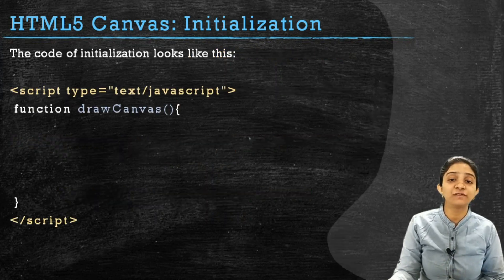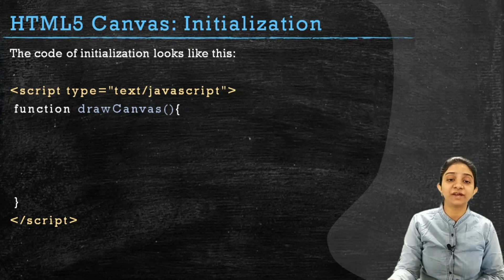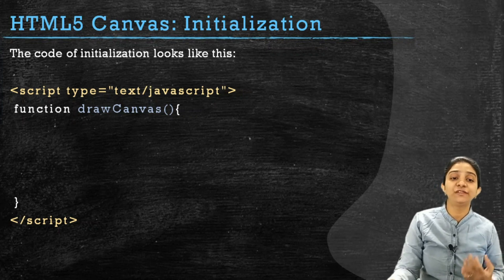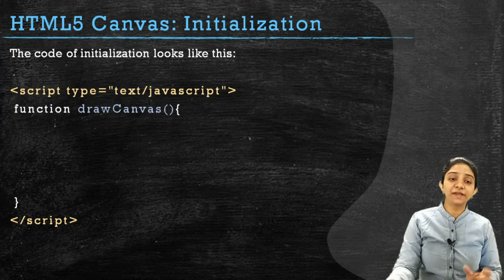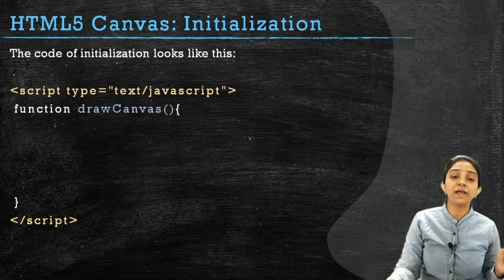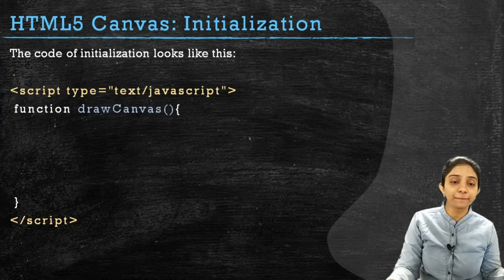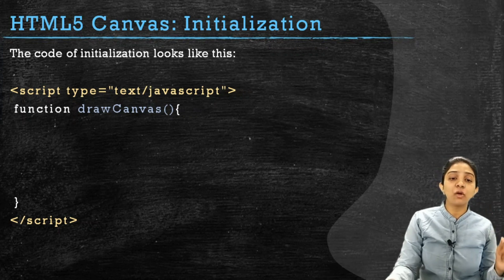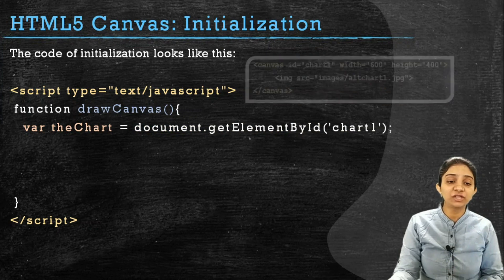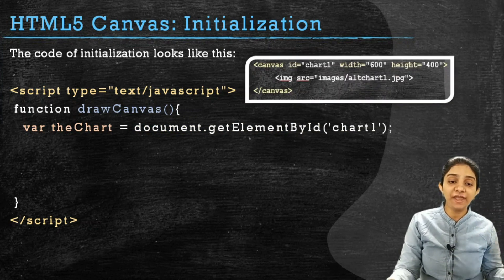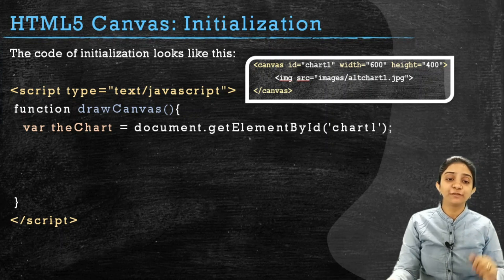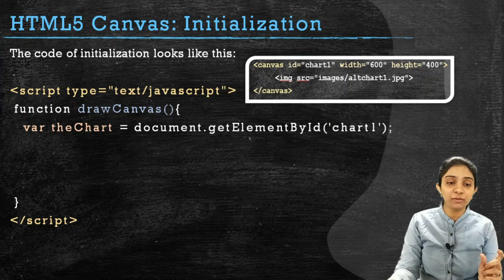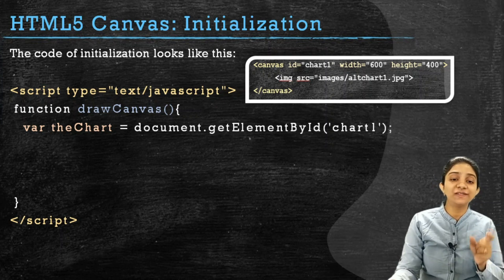The JavaScript code to initialize the canvas object looks like this. We use a script tag in our head section of the HTML document. The script tag takes one attribute called 'type' whose value is 'text/javascript'. Between the opening and closing tag of script, we declare a function called 'drawCanvas'. In this function, we first create a variable to hold the canvas object. The variable is declared with the 'var' keyword: var theChart.